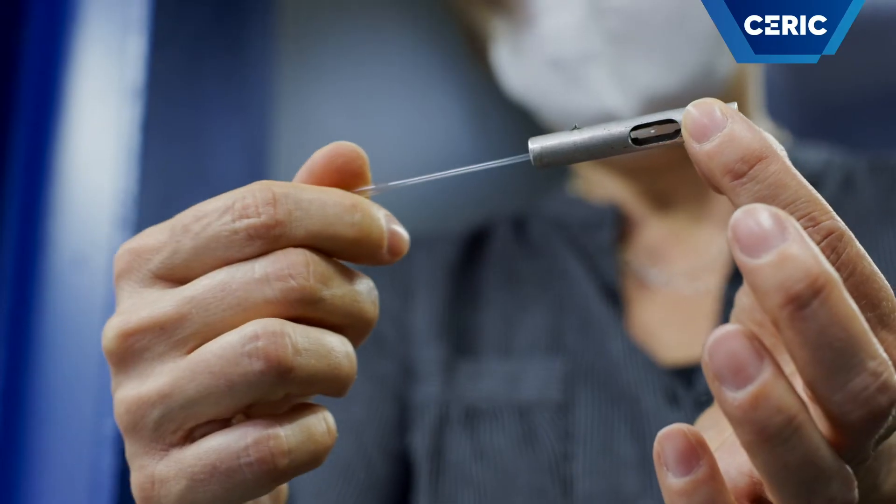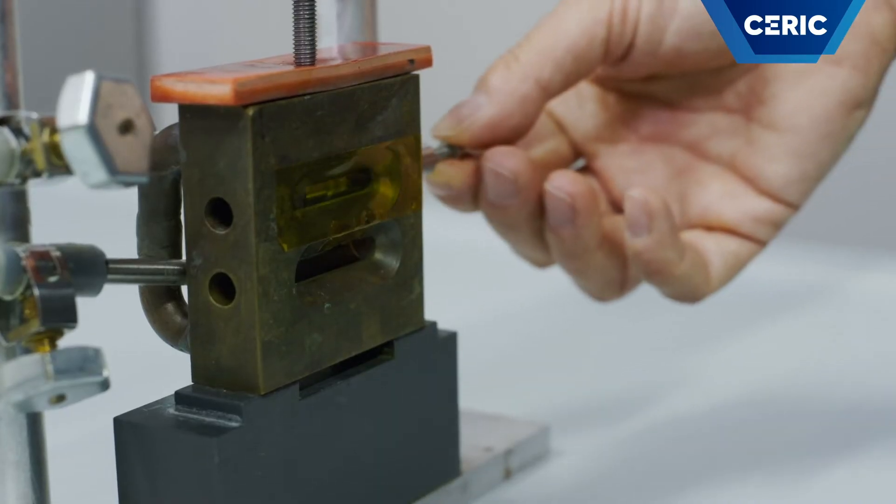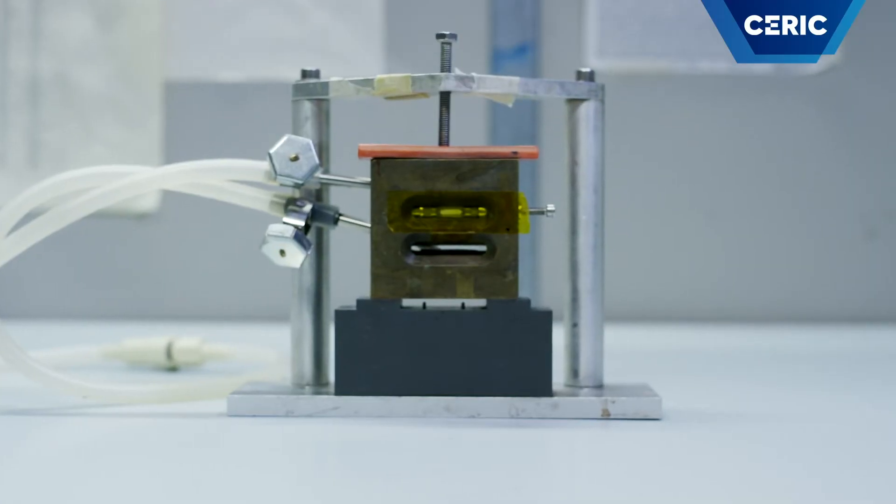Almost everything gives a SAXS signature and the sample environment is very flexible. We can study liquids, powders, solids, tissues, aerosols, and last but not least also surfaces by shining light under a small incidence angle onto it.